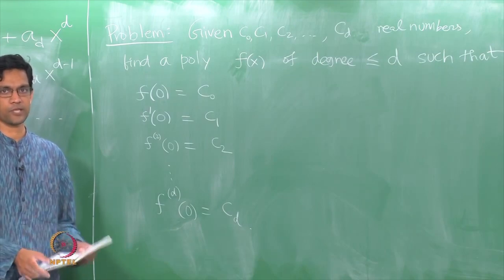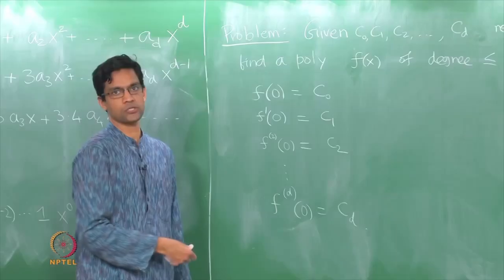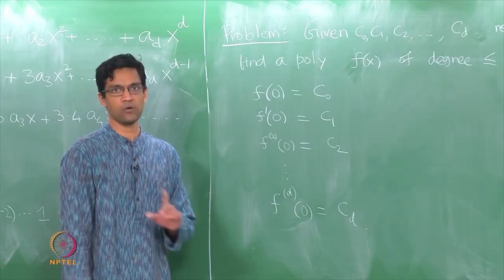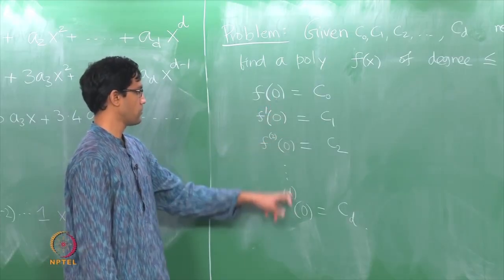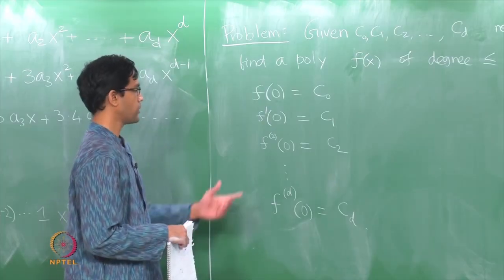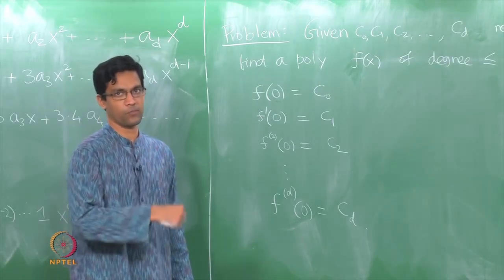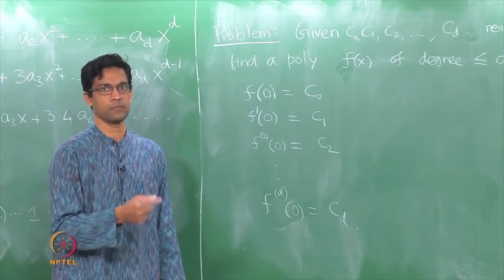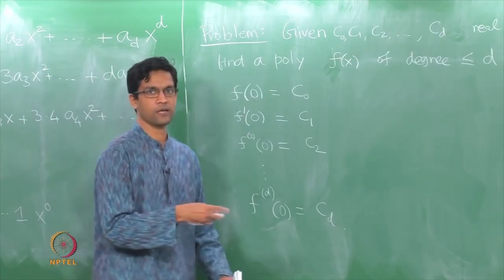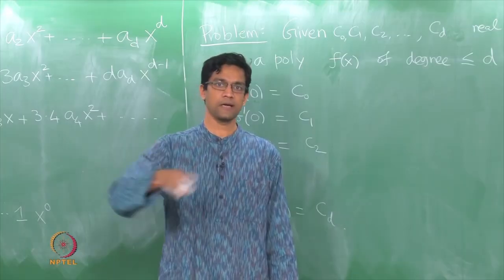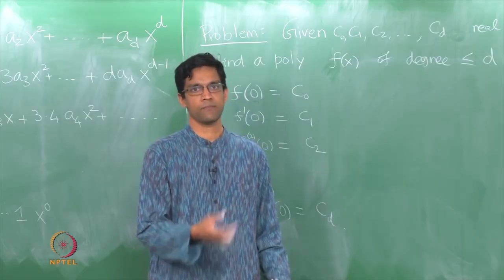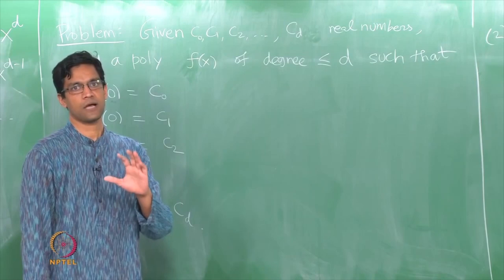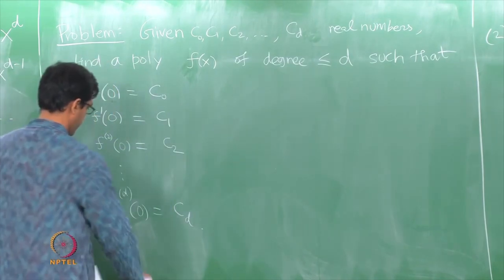In the interpolation problem, we were prescribing x values and y values and wanting a polynomial taking those prescribed values. Here it is different — there is really only one x value in play, which is x equal to 0. What you are now given is the y value at that point, the value of the derivative at that point, the second derivative, and so on. You are given values of all derivatives, but at a single point. Both problems give d plus 1 pieces of data and ask for a polynomial satisfying that data.